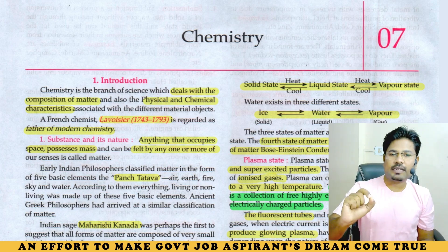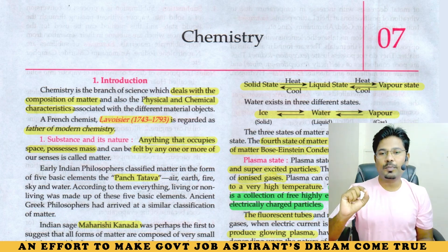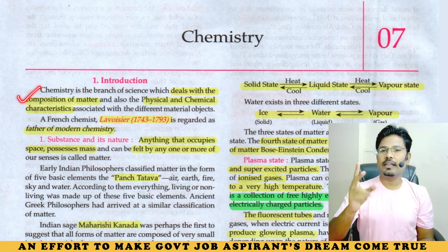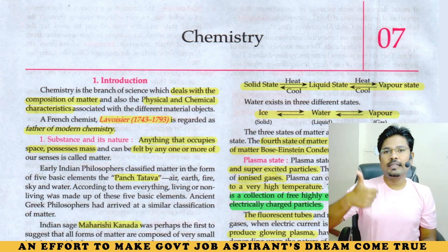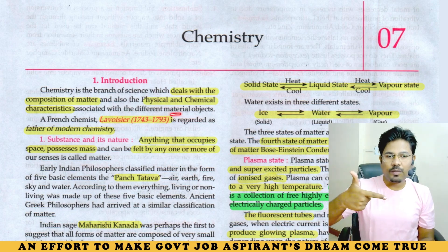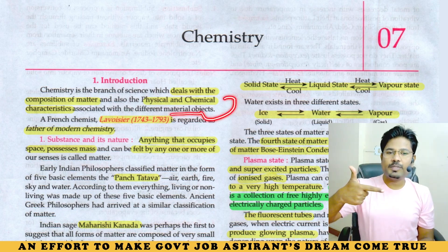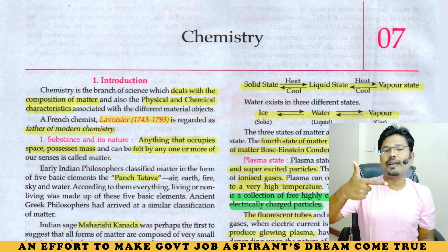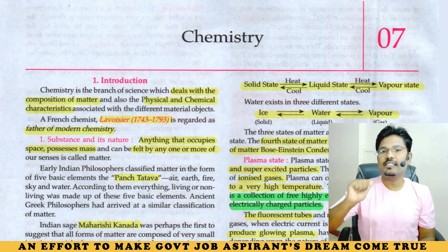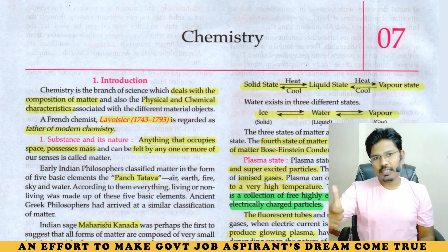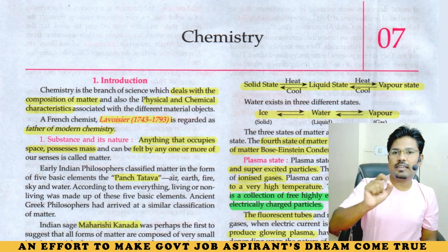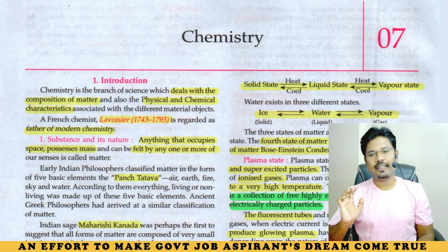Chemistry is a branch of science. It deals with the composition of matter. It deals with the composition of matter and the physical and chemical properties — or characteristics — of material objects. That is chemistry.